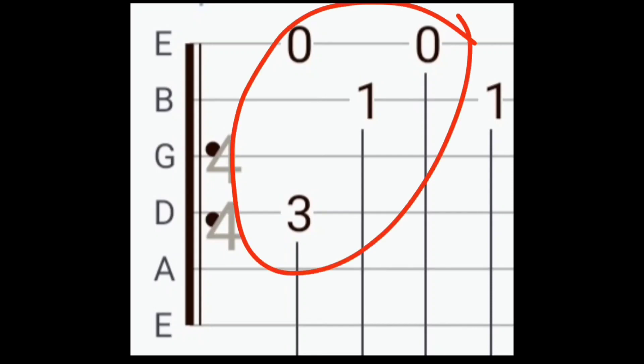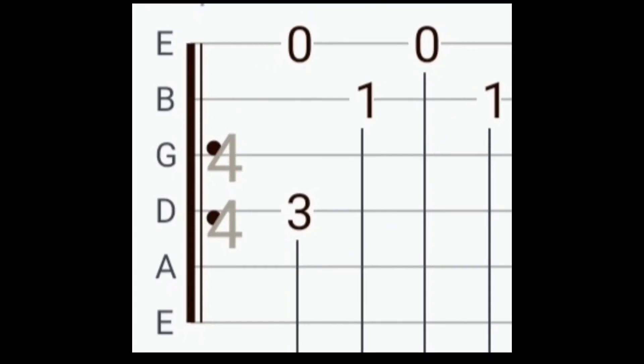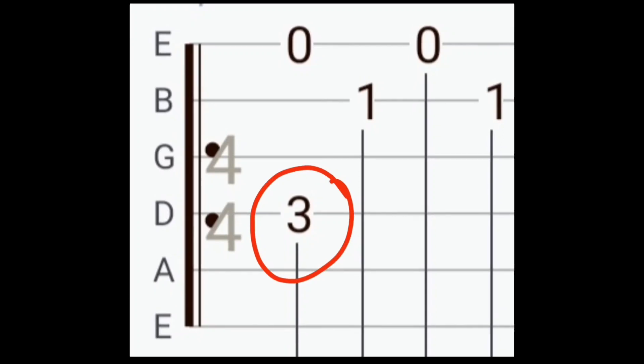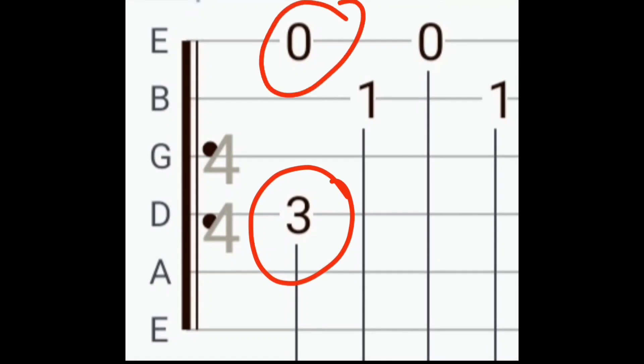The strings are fret numbers. For example, this three is on fourth string, so you have to place your finger in the third fret of fourth string. And this zero is open string.